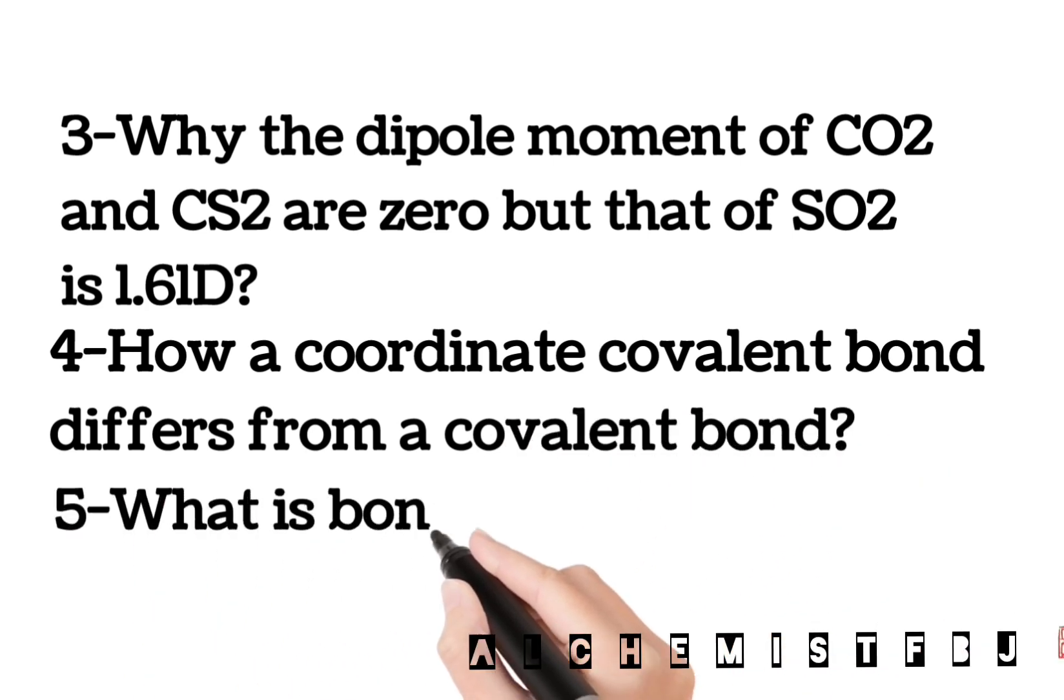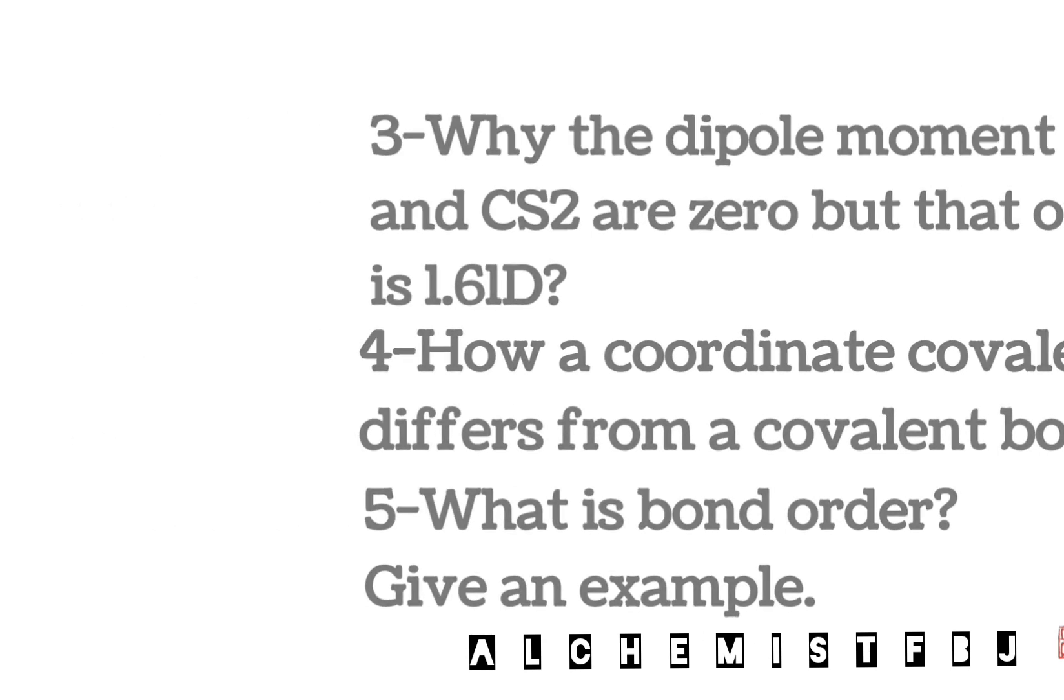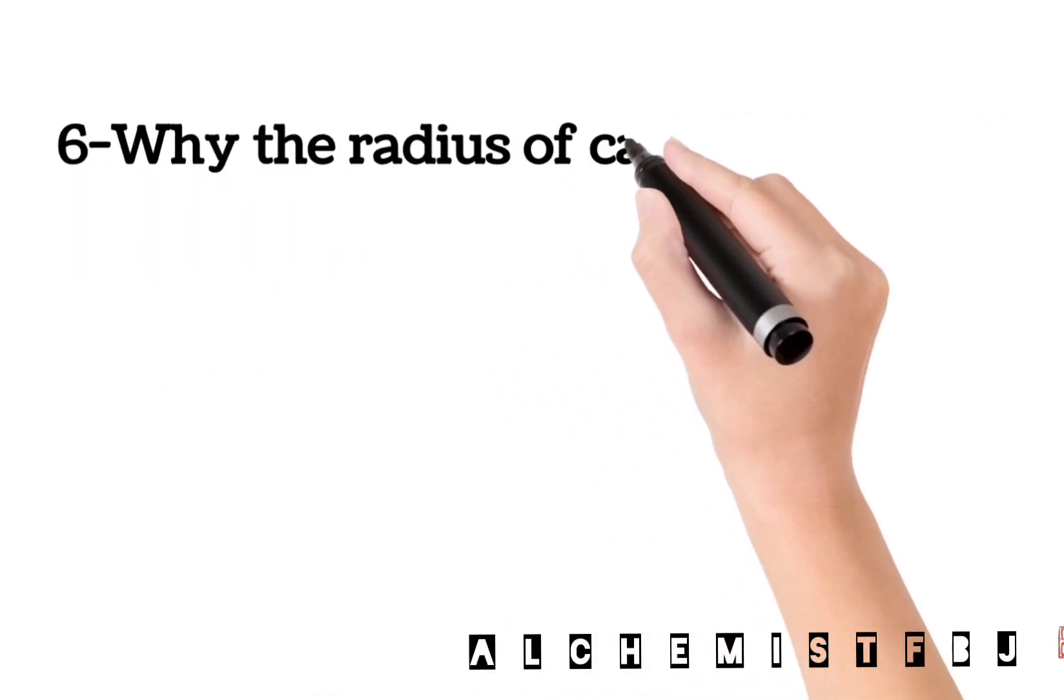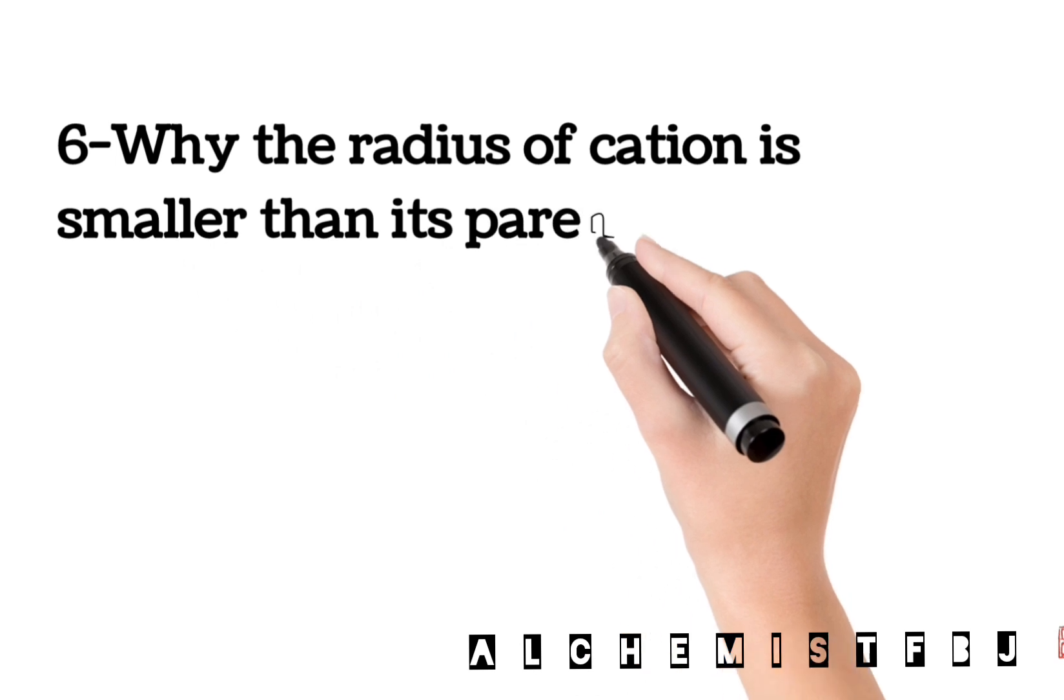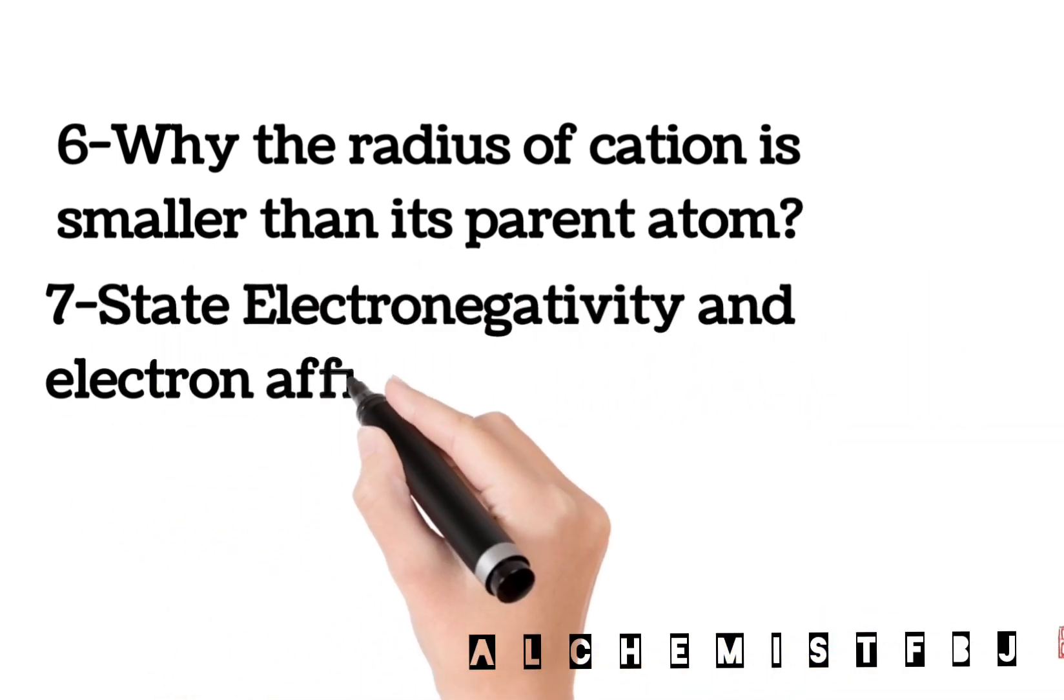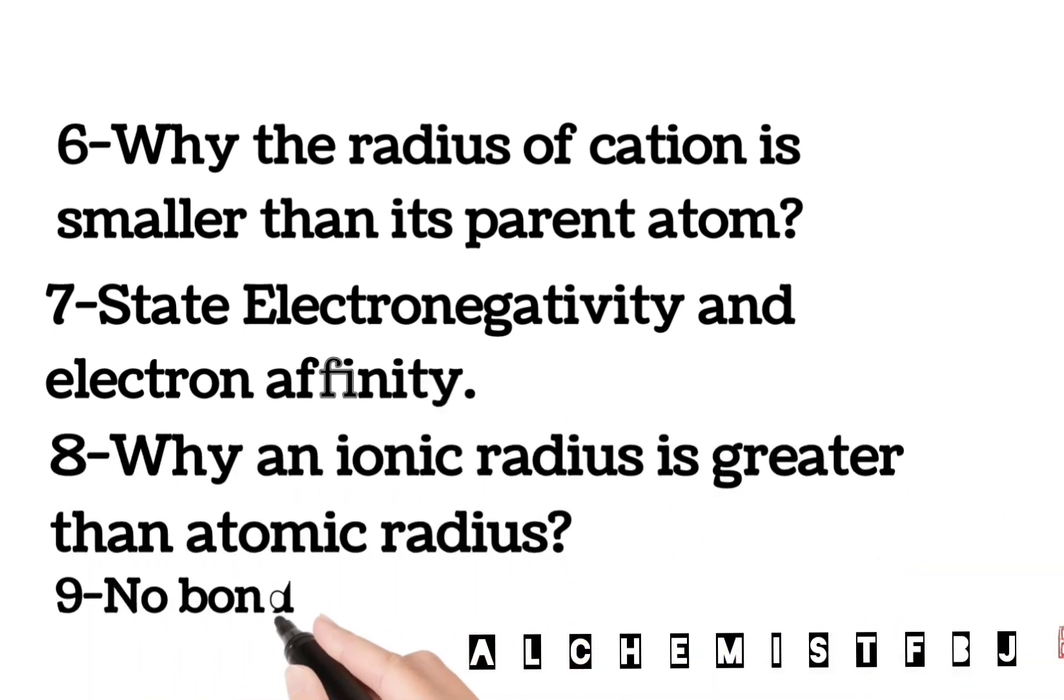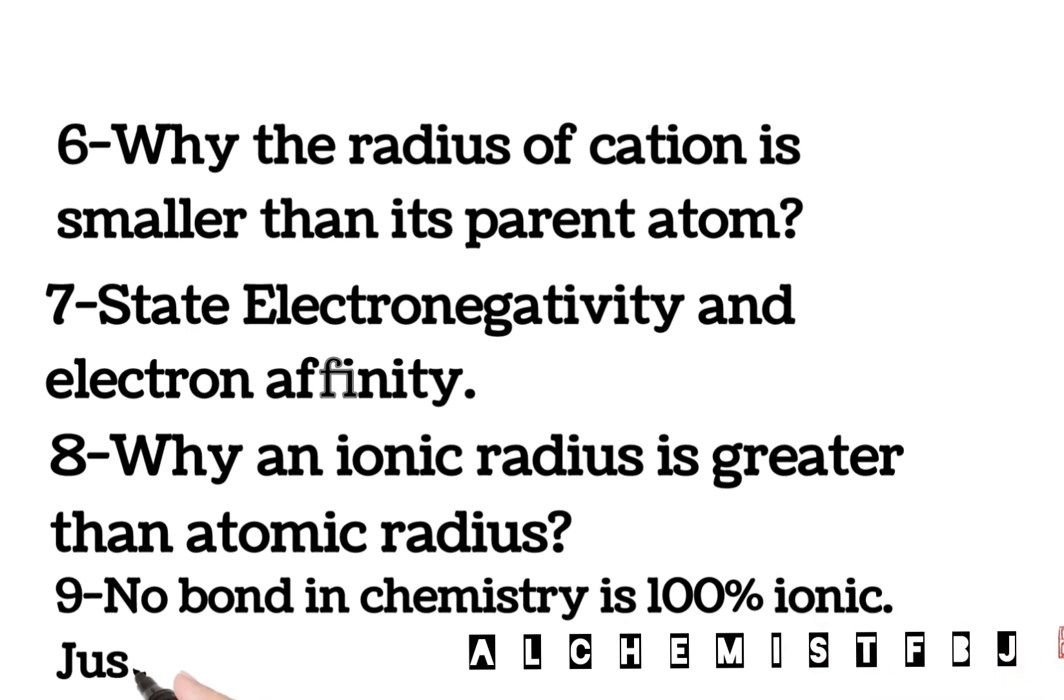Why the radius of cation is smaller than its parent atom? State electronegativity and electron affinity. Why an ionic radius is greater than atomic radius? No bond in chemistry is 100% ionic, justify.